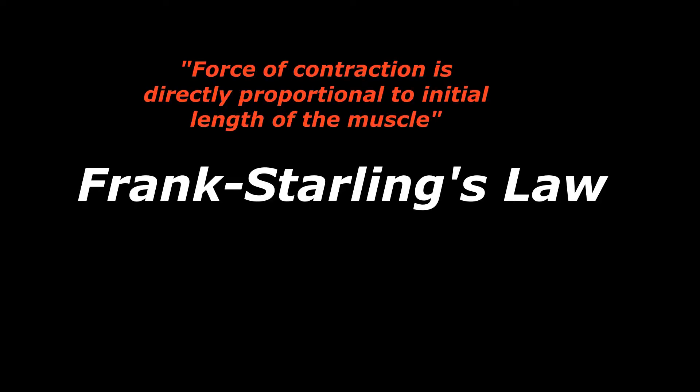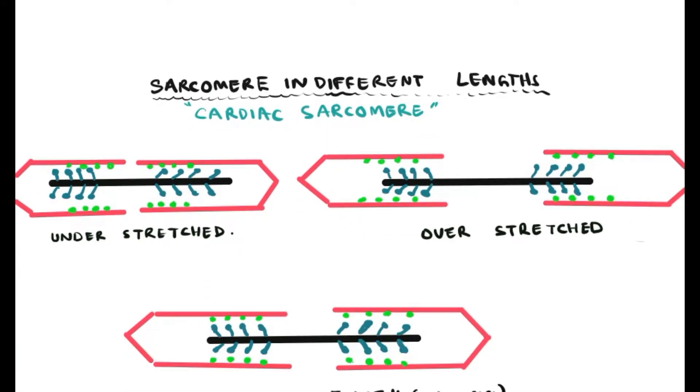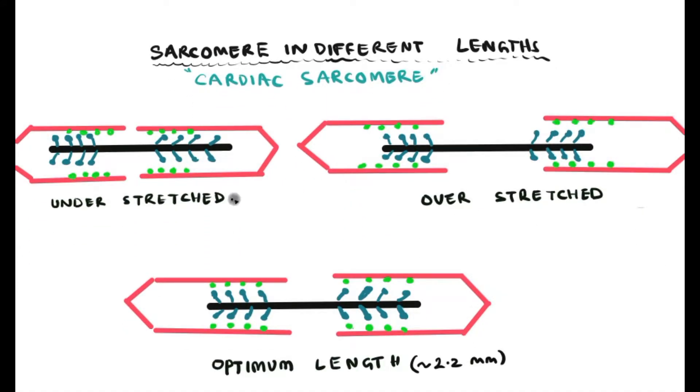Frank and Starling proposed the force of contraction is directly proportional to the initial length of the muscle fiber, whether it is cardiac or skeletal muscle. Here I would like to concentrate on the cardiac muscle sarcomere of different lengths and their force generation.